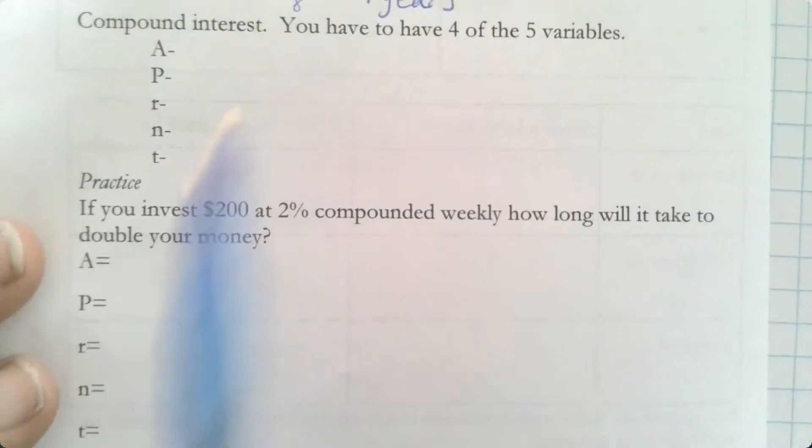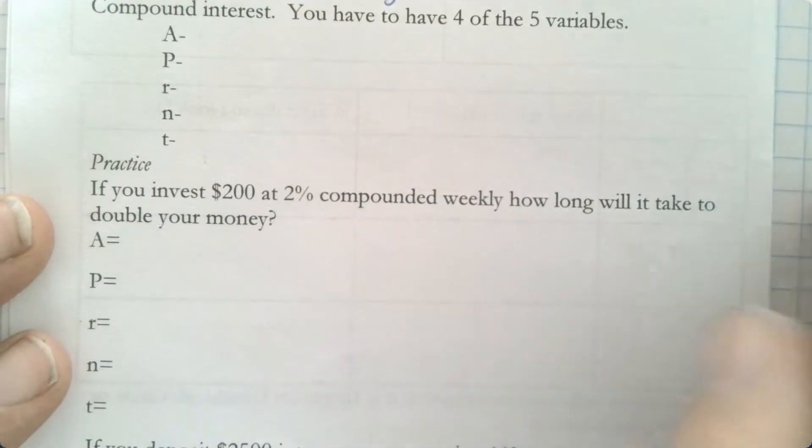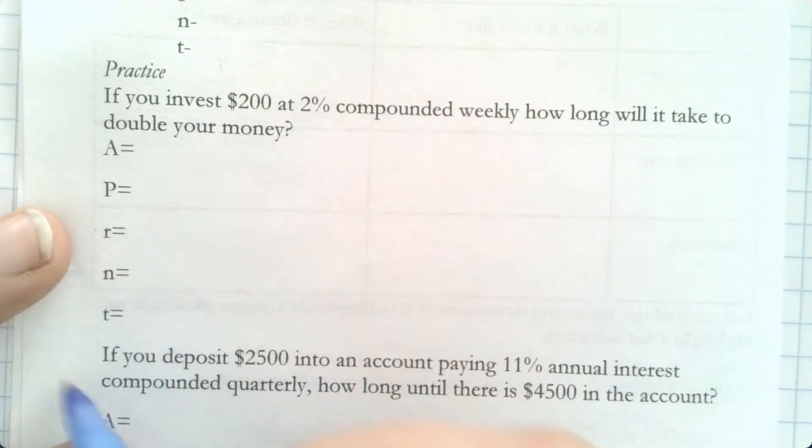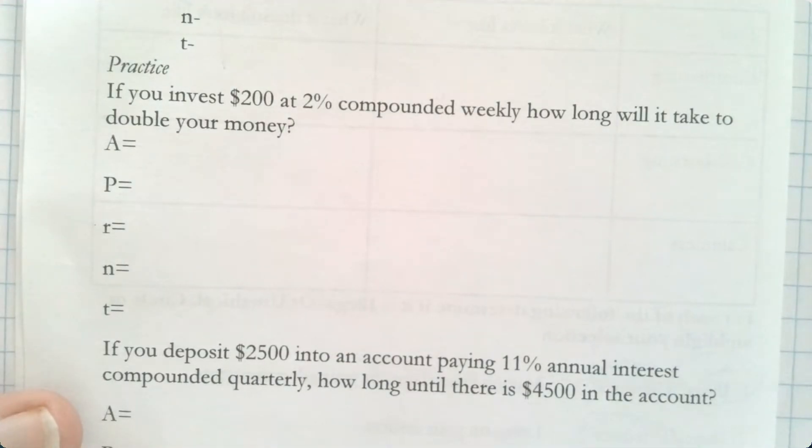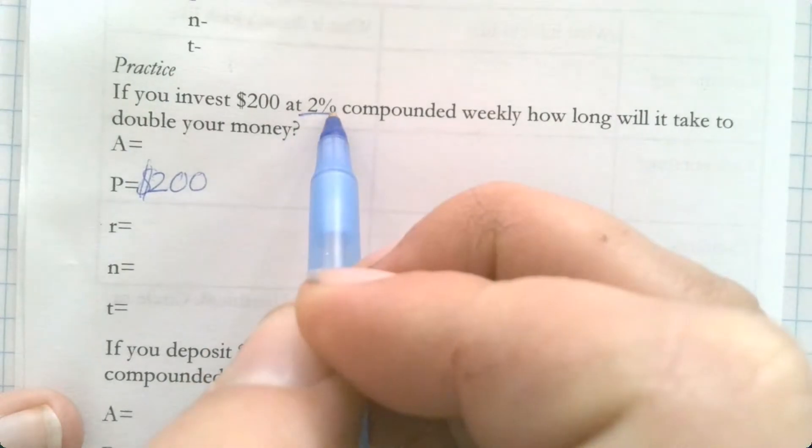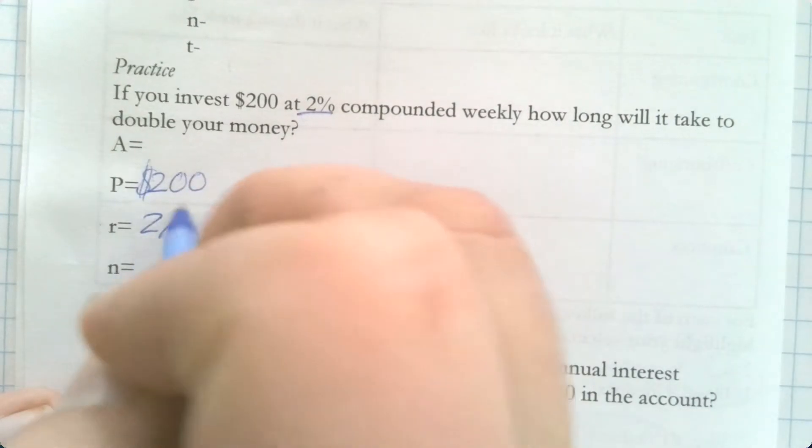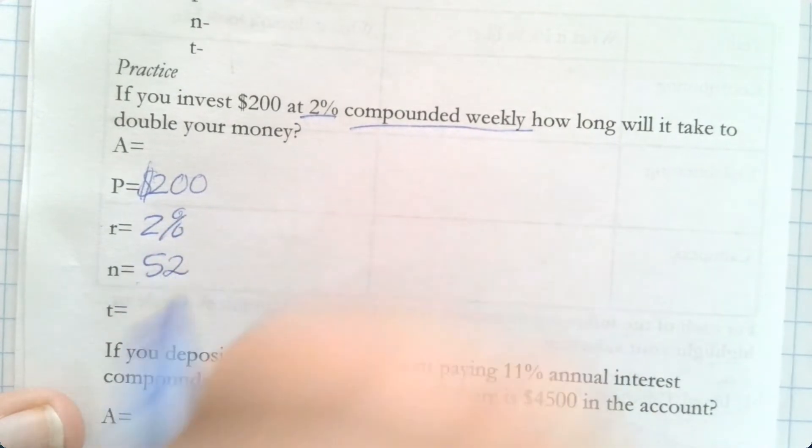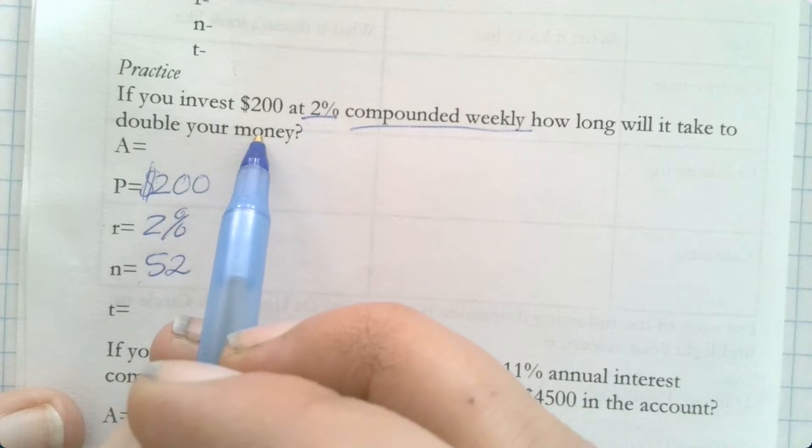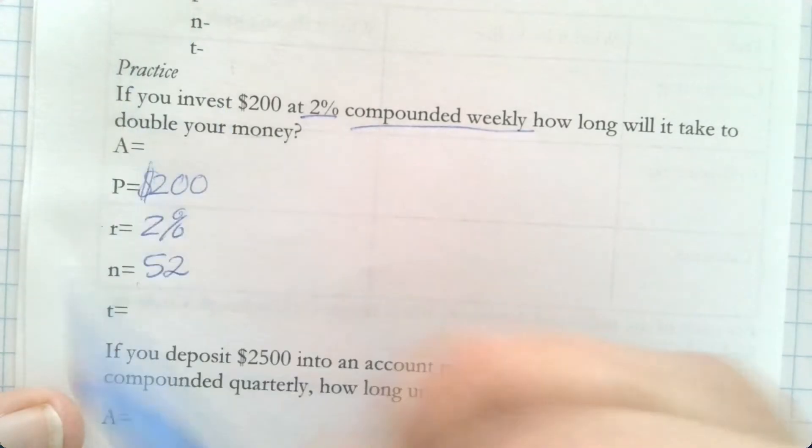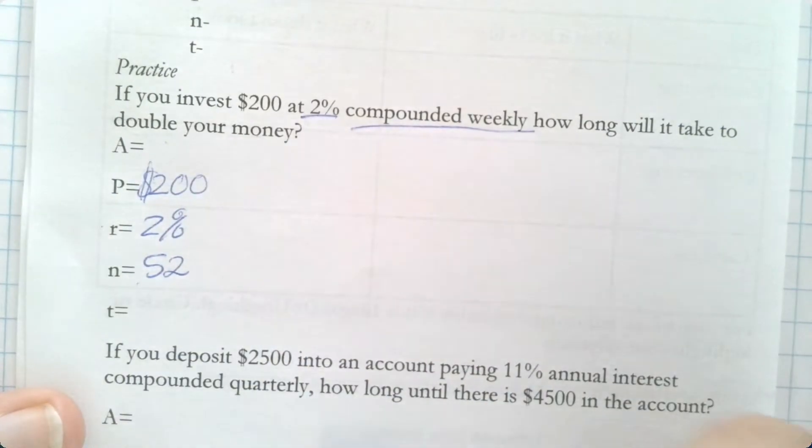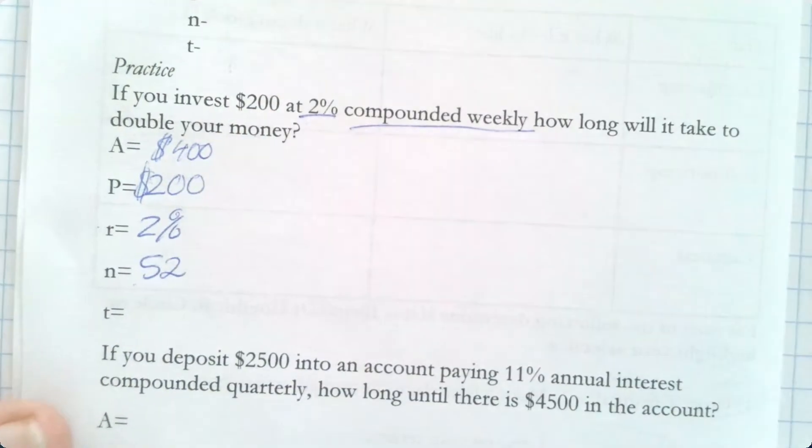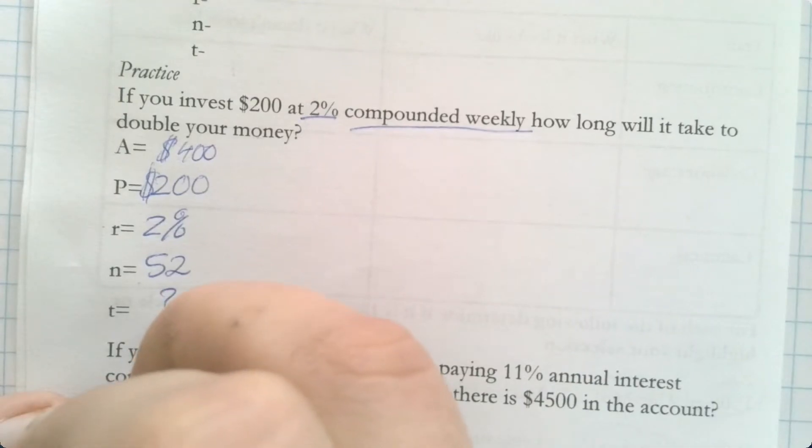All right guys, if I invest $200 at 2% compounded weekly, how long will it take to double? Okay, so let's break this down. Where's the 200 gonna go? I disagree. What's the 200 gonna be? It's not the A, it's your principal, it's your starting amount. Where's the 2% gonna go? What's gonna be N? 52, because there's 52 weeks in a year. And we want to know how long it's gonna take to double the money. If we double the money, what information does that give us? Does that give us the amount or the time? The amount. So we know we want to look for it at 400. Now if you can do this, good job.